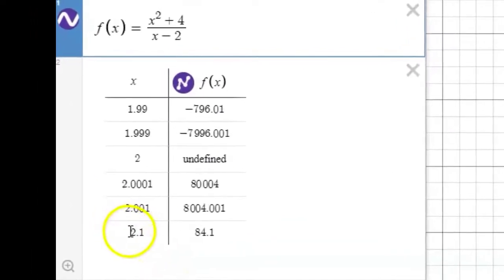Notice in the table when x is 2.1 as an input, the output is 84. When x is 2.001, the output is over 8,000. And when x is 2.0001, the output is over 80,000. So yes, this hunch that we had is probably true, that the closer the input quantity gets to 2, the just bigger and bigger and bigger the output value seems to get.